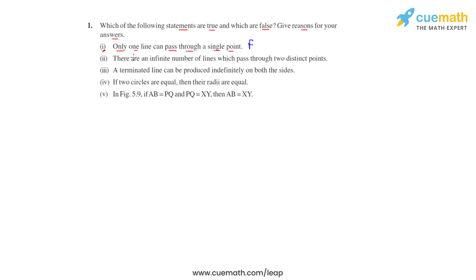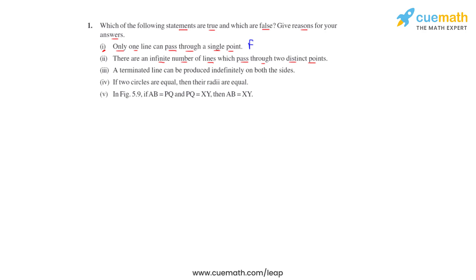Statement two says there are an infinite number of lines which pass through two distinct points. In the figure, P and Q are two distinct points, and as seen from the figure, there is only one single line that can pass through these two points. Also, according to Axiom 5.1 learned in this chapter: given any two distinct points, there is a unique line that passes through them. So statement two is also false.